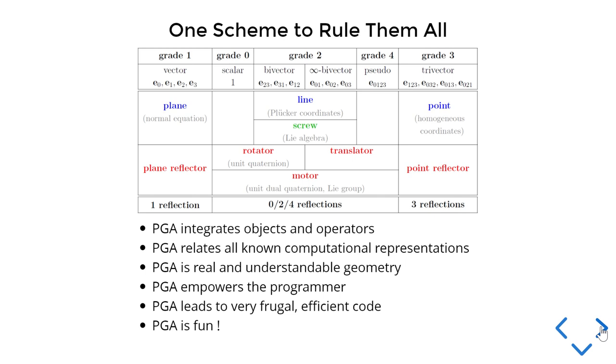The PGA, at the end of the talk, you will realize that all the elements that you like to be available—the planes, the lines, the points, but also the transformations, motors we call them in the form of translators and rotators, reflections—everything is present in a unified framework which not only has them present but also integrates the objects and the operators. You will see in gray that a lot of familiar but rather specialized geometrical representations like Plucker coordinates, Lie algebra, homogeneous coordinates are just naturally embedded.